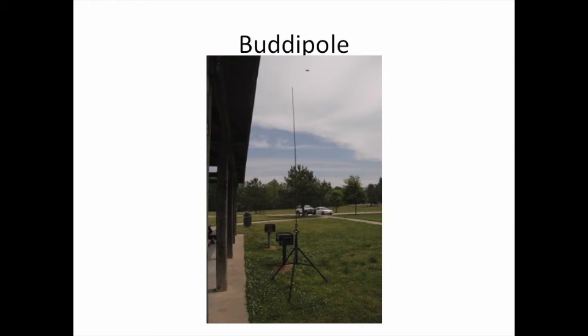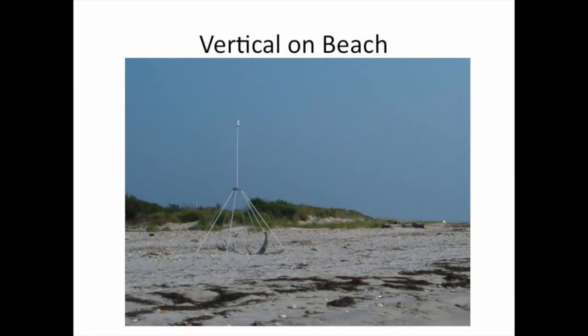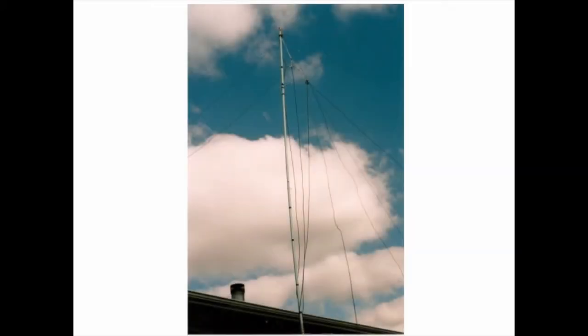There are things like a Buddipole that we set up for some QRP operation every so often — it doesn't take much to make a contact. We've even put up 135-foot-high antennas held up by weather balloons. Here's a picture from the 70s — we used it in 160 contests and did quite well. You can also go to the beach and set up a makeshift antenna — this was a Hustler mobile antenna on a little stand with a QRP radio, and we had a lot of fun.